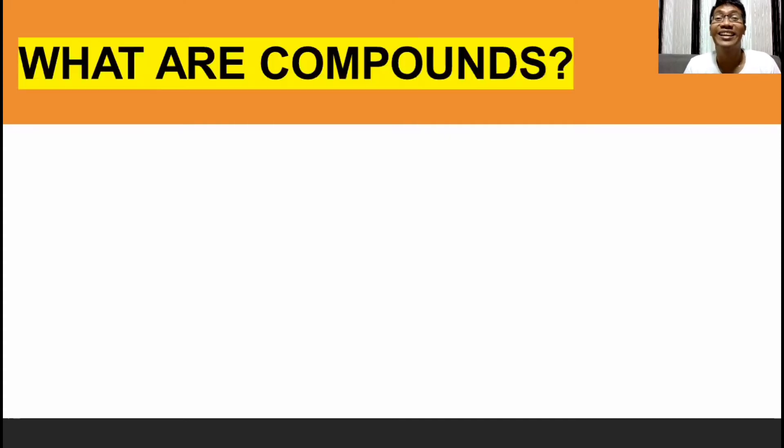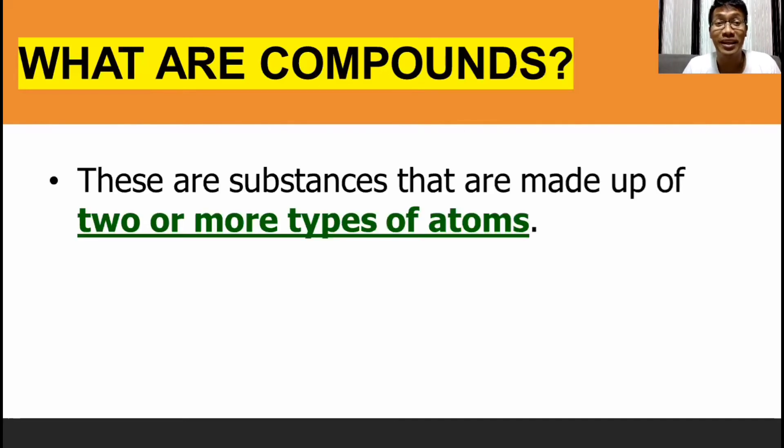But for today, we're going to talk about the other classification of pure substance, which is the compound. So, what are compounds? When we say compounds, these are substances that are made up of two or more types of atoms.